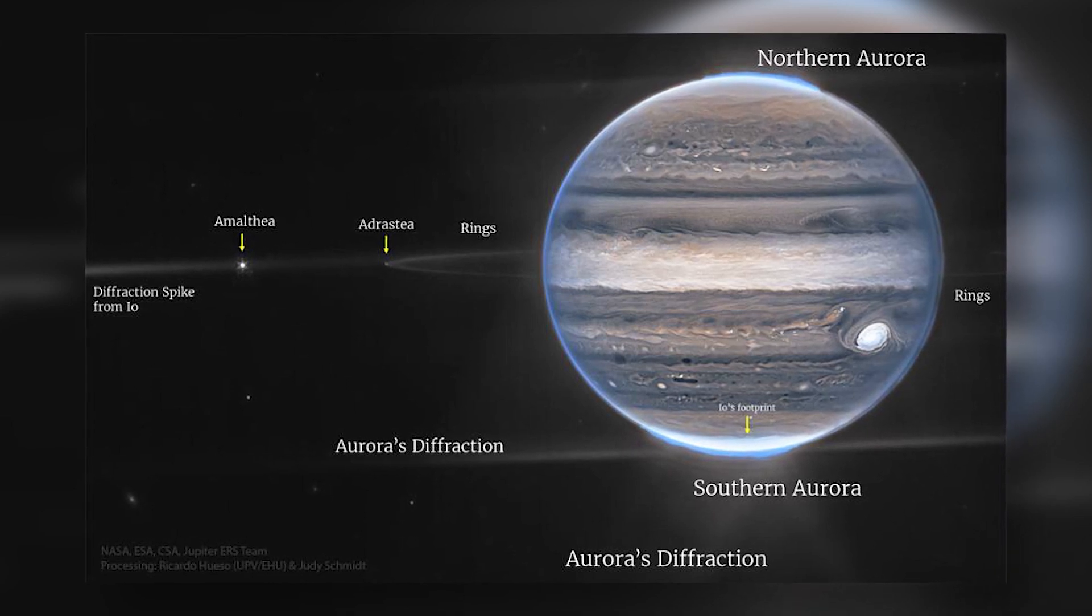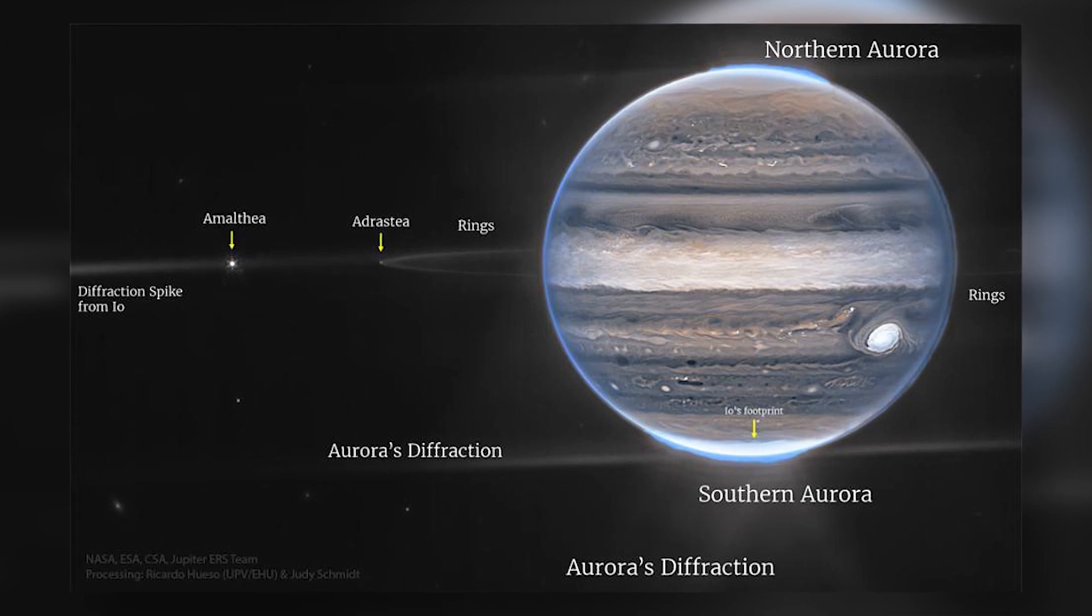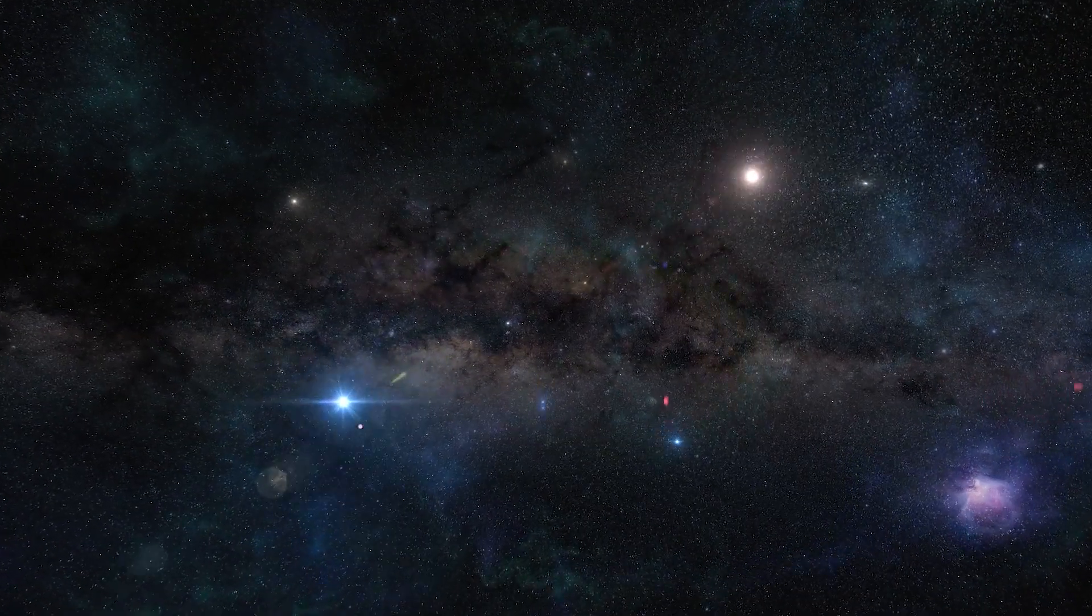Incredibly, we can see details of Jupiter, its rings, tiny satellites, and even galaxies in a single image. And this is only the beginning.